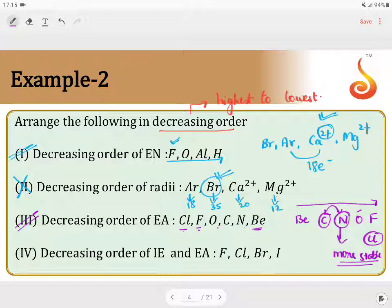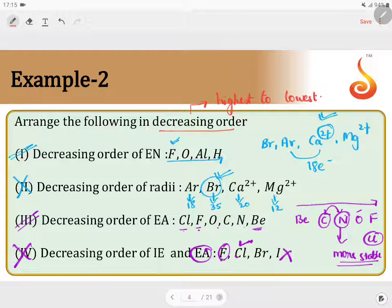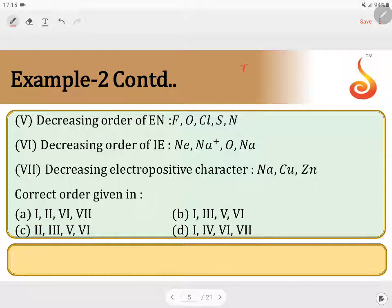Statement 4 gives a decreasing order combining ionization energy and electron affinity. Fluorine has the highest ionization energy, but the highest electron affinity belongs to chlorine, not fluorine. They have given the opposite order, so statement 4 is not correct. Therefore, statements 1 and 3 are right.